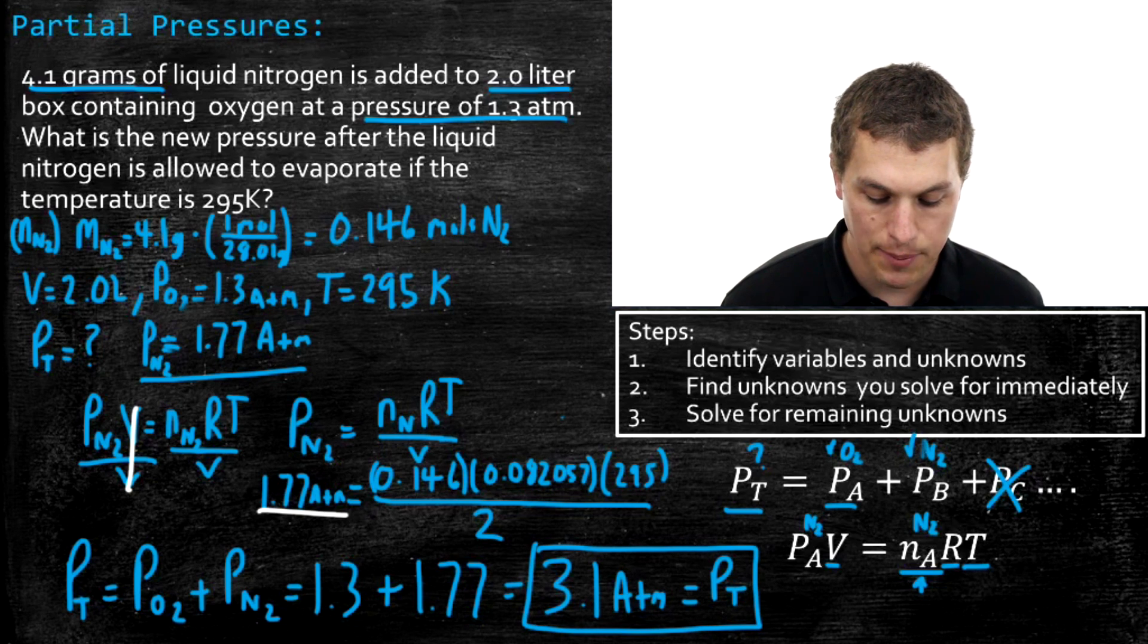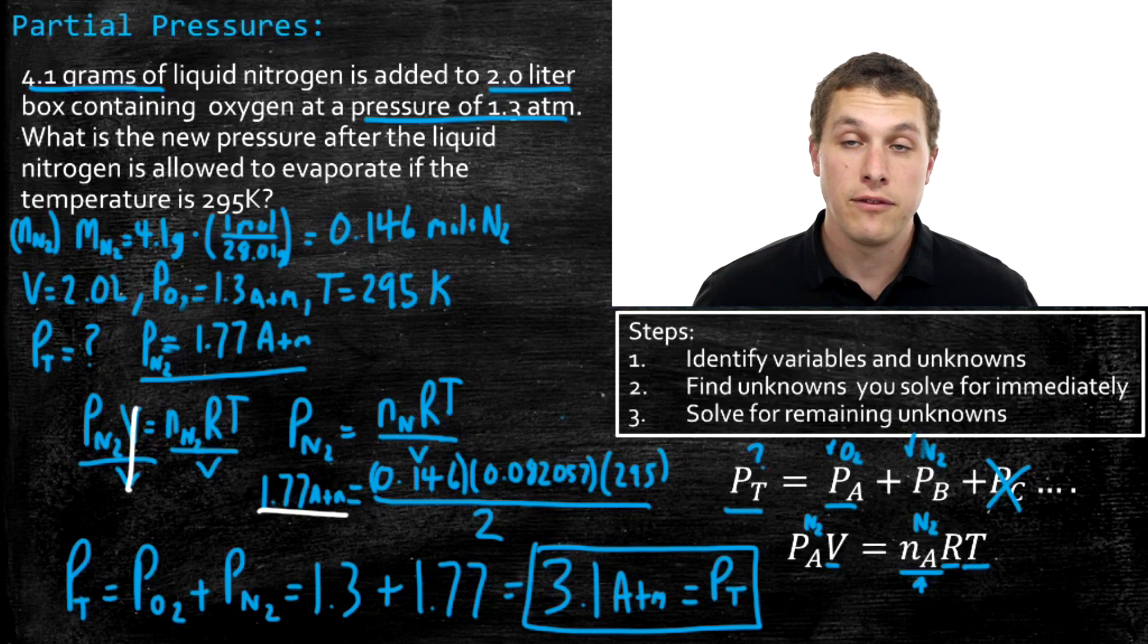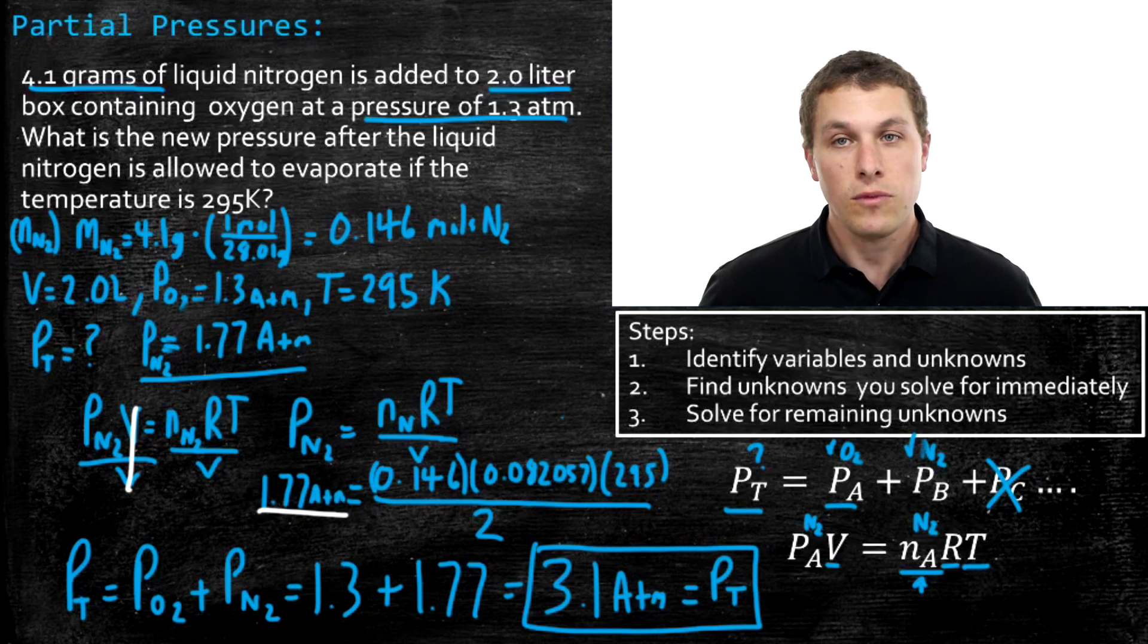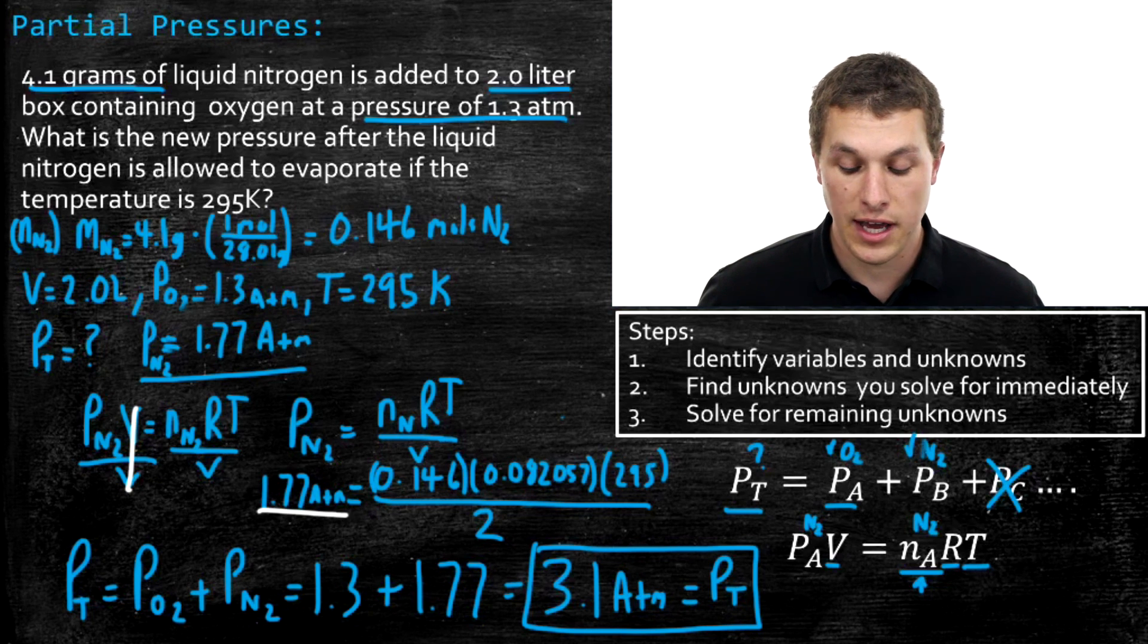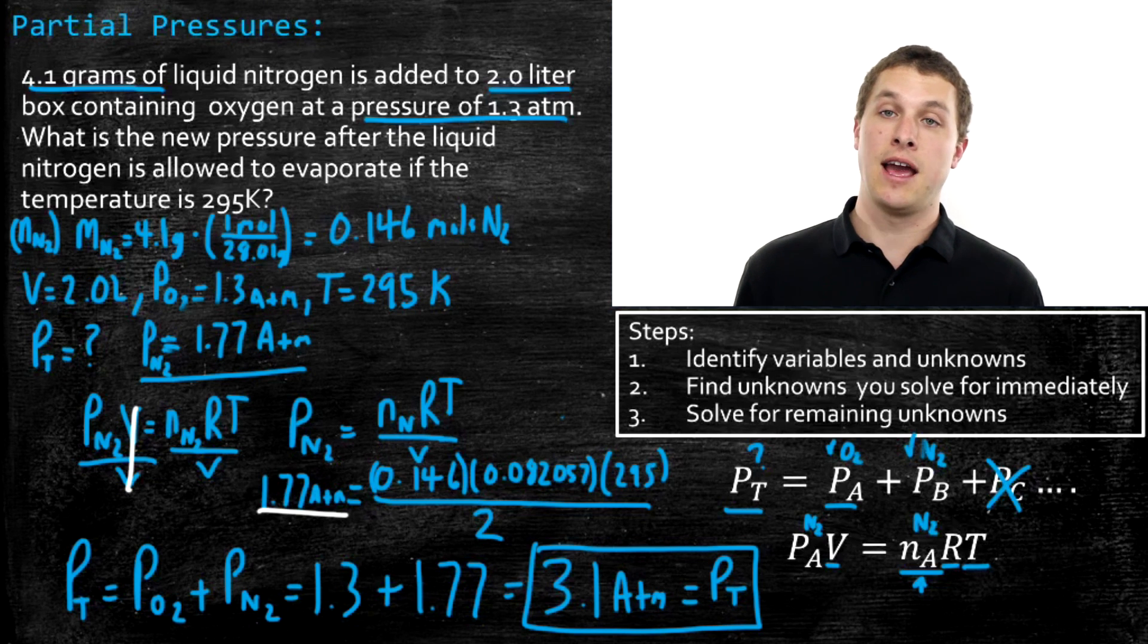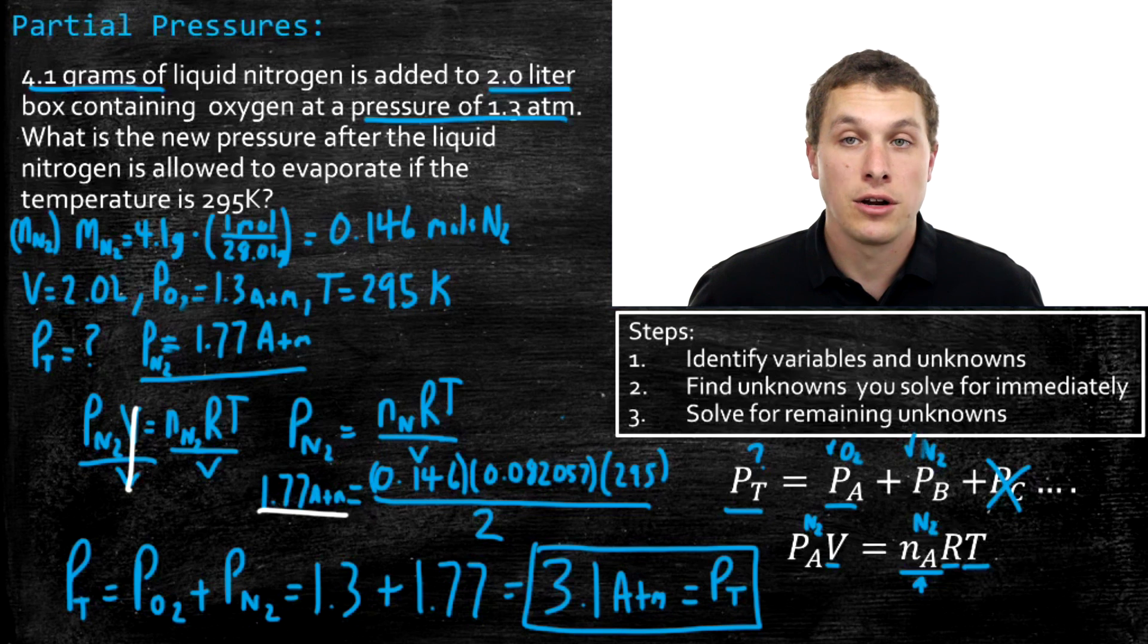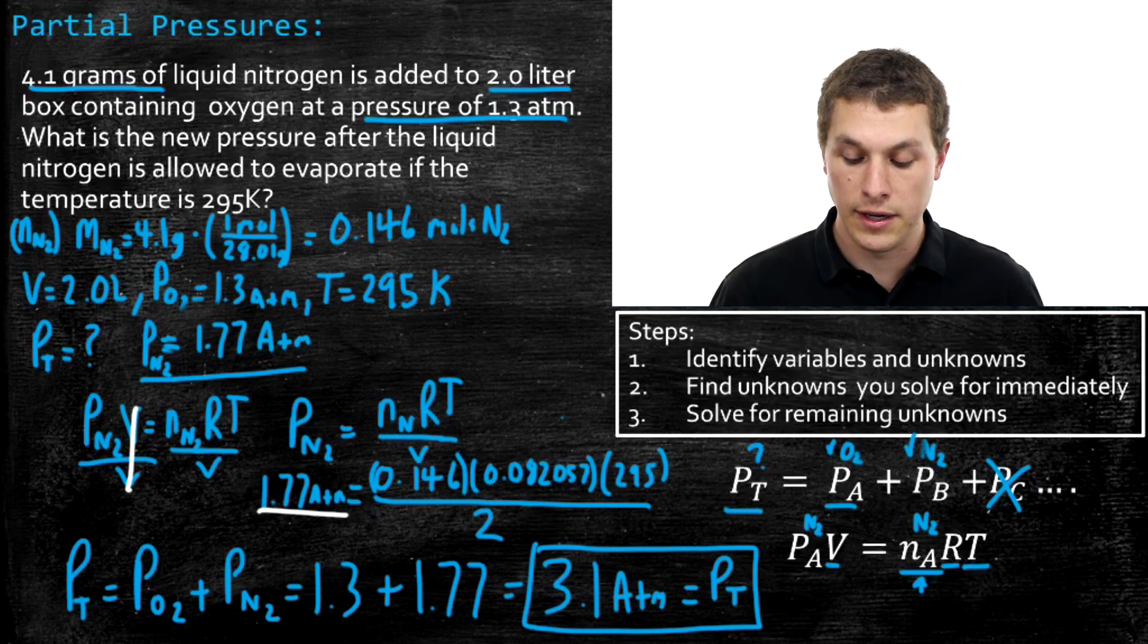So that is the new pressure inside my box. So what have I done here? Let's retrace. We were given a box with oxygen in it, and we added nitrogen to it. We let that liquid nitrogen evaporate and add pressure. So we calculated how much pressure would come from that nitrogen once evaporated, using the ideal gas law. And then using Dalton's laws of partial pressure, we just added together the contributions from oxygen, 1.3 ATM, and the contribution from nitrogen, 1.77 ATM. And we got our new total pressure. So after that liquid nitrogen evaporates, we're going to have a pressure in our box of 3.1 ATM.